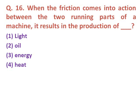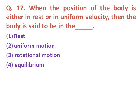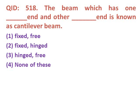Question sixteen: When friction comes into action between two running parts of a machine, it results in the production of — option one: light; option two: oil; option three: energy; option four: heat. The correct answer is heat, option four.